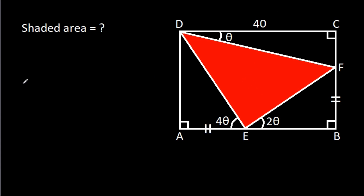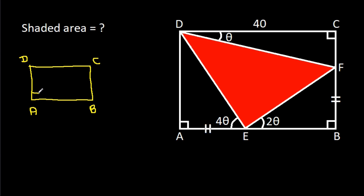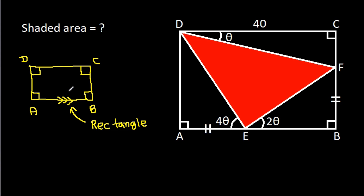In ABCD, this angle is 90 degrees and this angle is 90 degrees, so this angle will also be 90 degrees. That means ABCD will be a rectangle, so AB will be parallel to CD.